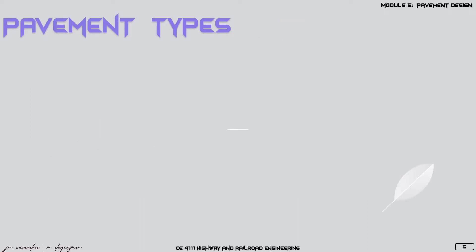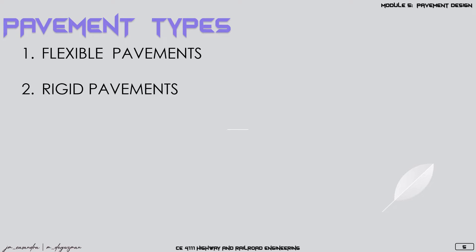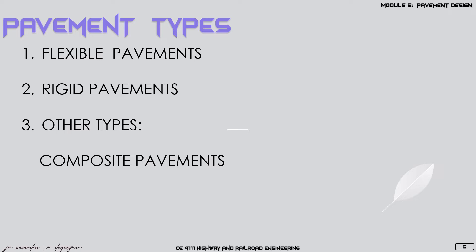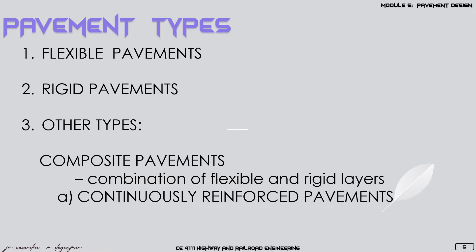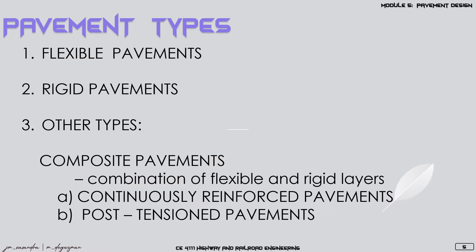For pavements, there are generally two types: flexible pavement and rigid pavement. We also have a third type called composite pavements, which is a combination of the flexible and rigid layers. Examples of composite pavements include continuously reinforced pavements and post-tension pavements. In this lecture, we will focus on the main types — flexible and rigid pavements.